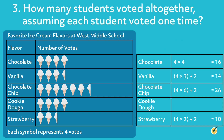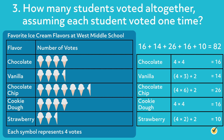How many students voted altogether, assuming each student voted one time? First, find the total number of votes for each flavor. Remember that each symbol represents 4 votes and each half symbol represents 2 votes. Multiply 4 times the number of symbols for each flavor, then add 2 to the product for any half symbols. Next, add the total votes for each flavor to find the total number of students that voted. 16 plus 14 plus 26 plus 16 plus 10 equals 82. So 82 students voted altogether.